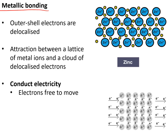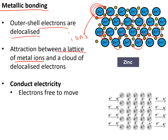Metallic bonding involves delocalised electrons. A delocalised electron, rather than just orbiting one atom, is free to travel between all of the atoms around it. This leaves the metal atoms as positive ions because they've lost their outer shell electrons. The metallic bond is the attraction between the lattice of positive metal ions and the cloud of delocalised electrons. Because the electrons are free to move, metals conduct electricity.